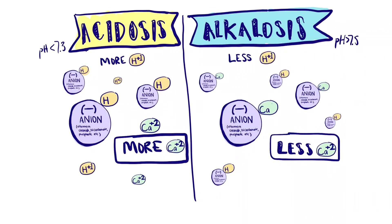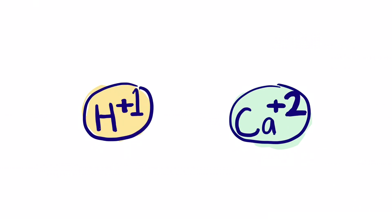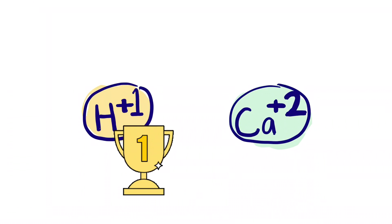In this video, I'm going to explain my mnemonic for ionized calcium in acidosis and alkalosis. I use mnemonics related to their chemistries: hydrogen is plus one charge and calcium is plus two. From this, I use the idea that hydrogen is in first place and calcium is in second place.